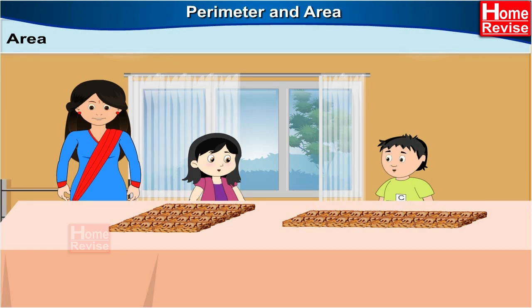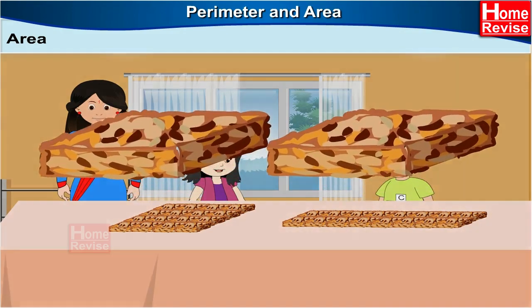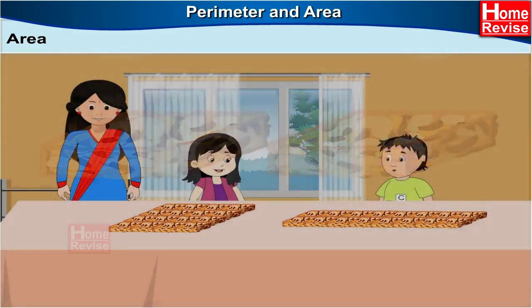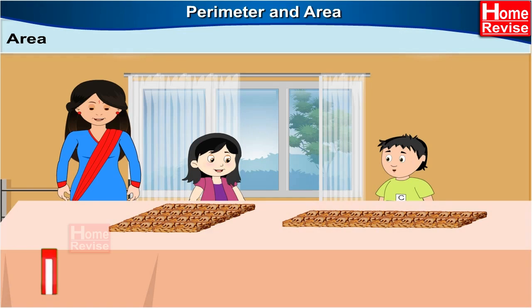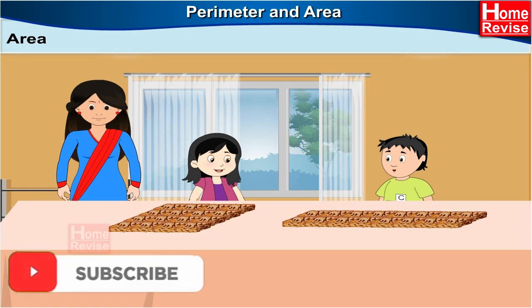Now tell me, who has more chikki? Oh, we were fighting over nothing. We both have the same amount of chikki. That's right. But let me explain it to you properly. The thickness of the square of chikki you both have is the same, so let us measure their surfaces. There are 16 squares of equal measure on both your slabs. Therefore, you both got the same amount of chikki.